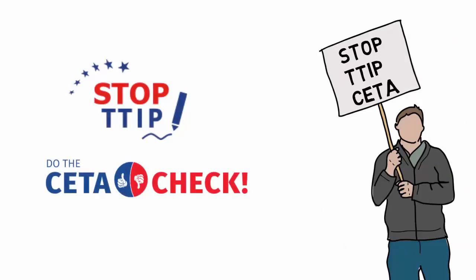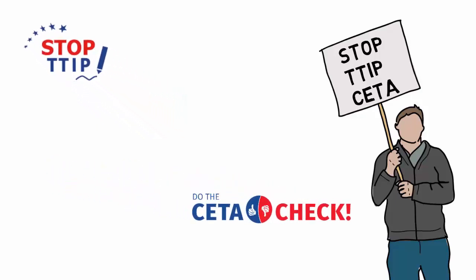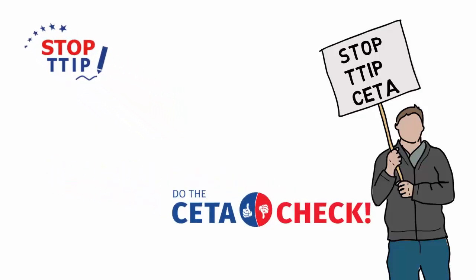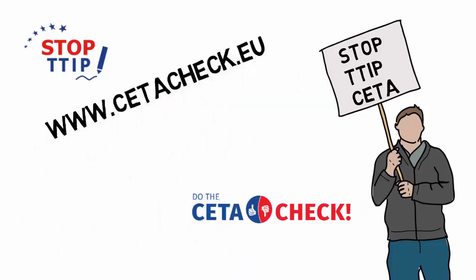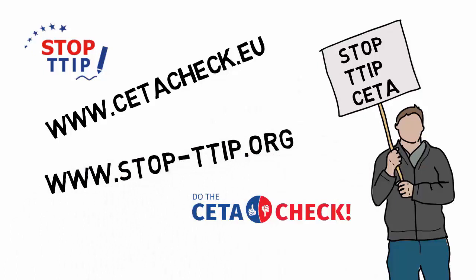You can directly ask members of the European Parliament to vote against CETA using CETA-Check. Go to www.cetacheck.eu or www.stop-ttip.org. Europe is yours. Don't give her up.